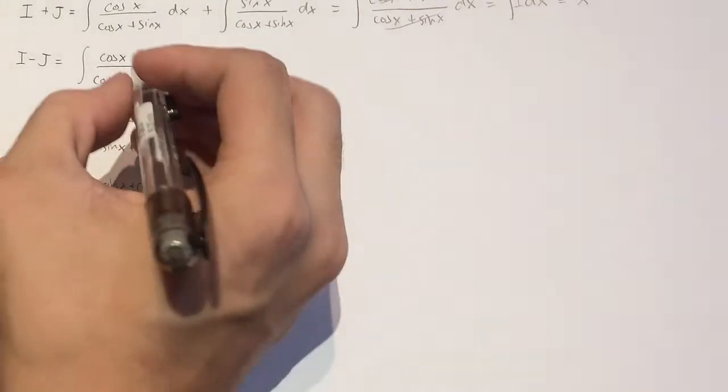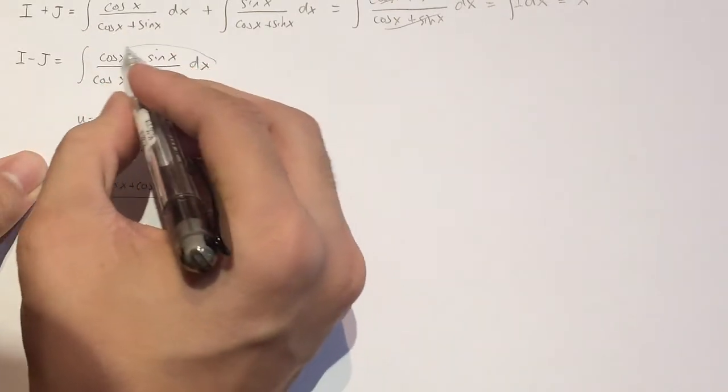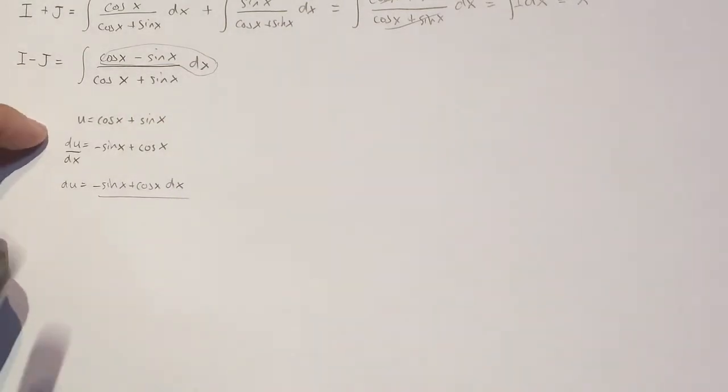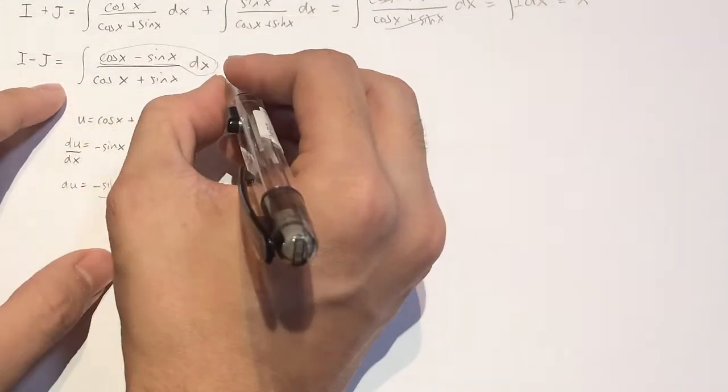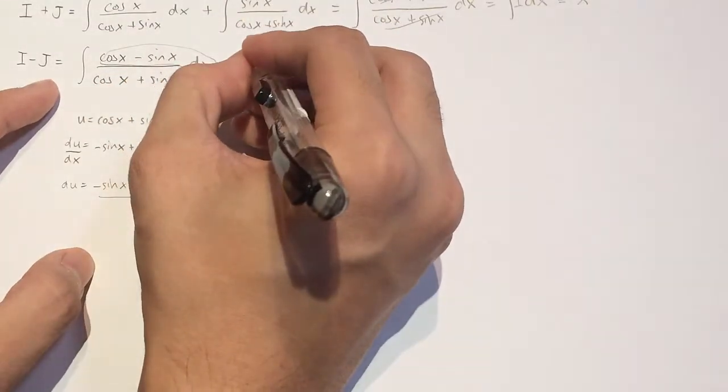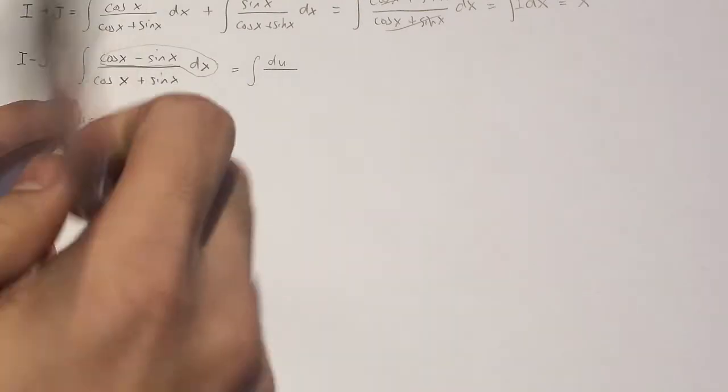This is exactly what we have at the top over here, right? So instead of this integral, I'm going to use this substitution and substitute it in here. And so what you have is the top bit, which has become du divided by the bottom bit, which is just u.